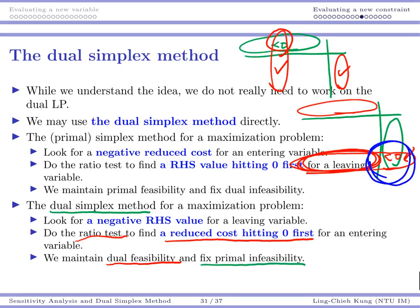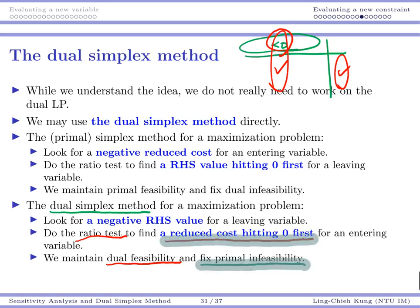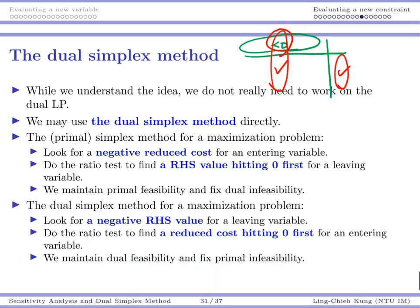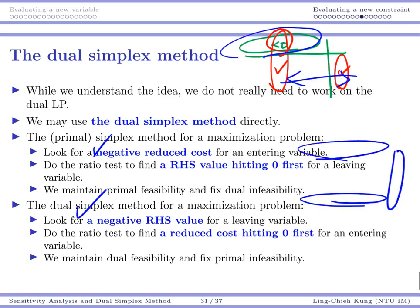The key insight is that the primal simplex method and the dual simplex method are mirrors of each other. For primal simplex, you look at the top row and then do a ratio test among columns. For dual simplex, you look at the right-hand side and then do a ratio test among rows. We will see some examples shortly.